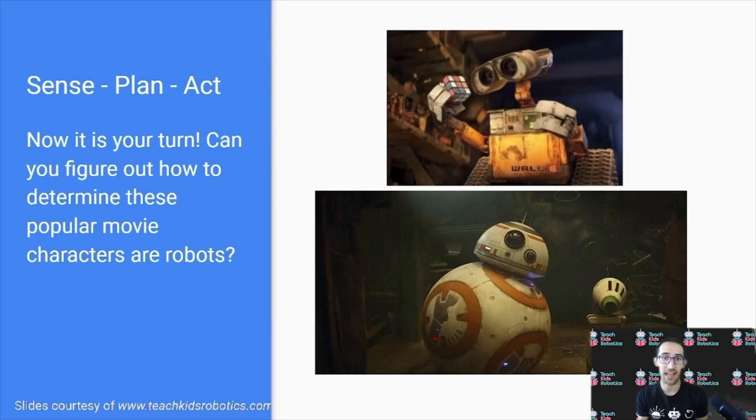We can see they all have plans, whether they be to help the protagonist or to solve a Rubik's Cube, and we can see they're capable of acting in the real world, actuating and moving their motors, enabling them to either roll around as BB-8 or move their arms and roll around as WALL-E.